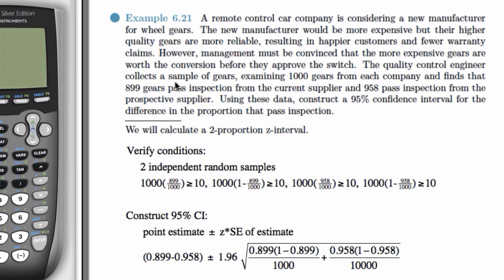However, management must be convinced that the more expensive gears are worth the conversion before they approve the switch. The quality control engineer collects a sample of gears, examining 1,000 gears from each company, and finds that 899 gears passed inspection from the current supplier and 958 passed inspection from the prospective supplier. Using these data, construct a 95% confidence interval for the difference in the proportion that passed inspection.